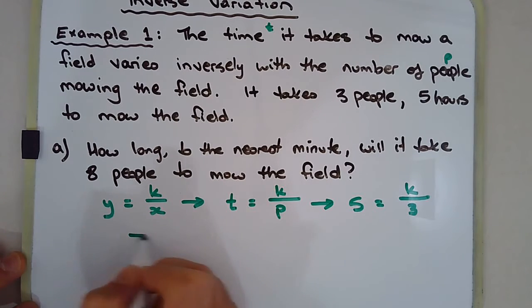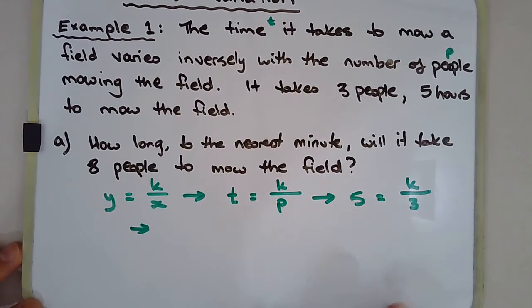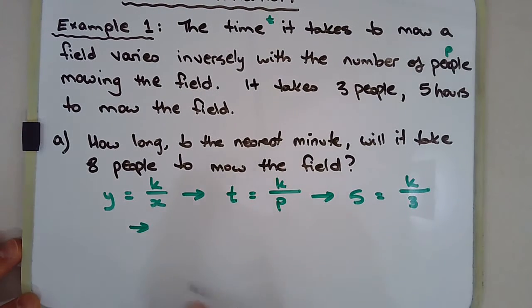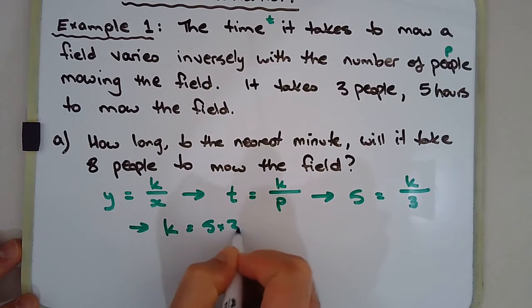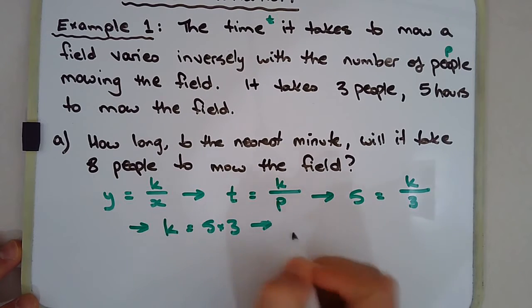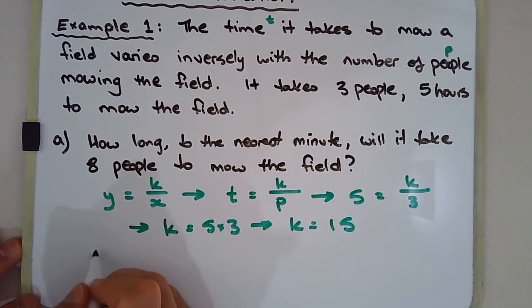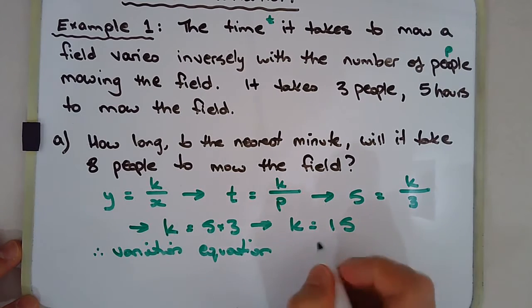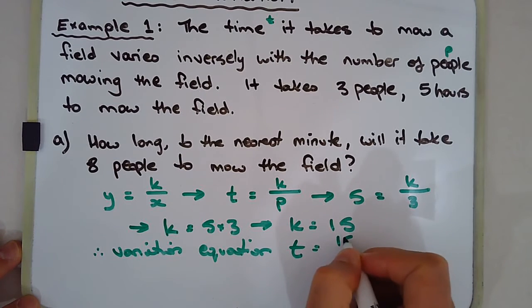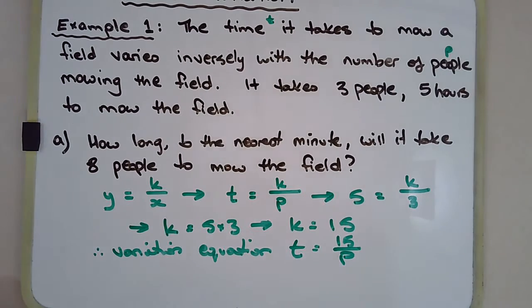So moving on sort of to the next line. So I'm doing this to save a bit of space here. So K is equal to five times three. So K equals 15. So therefore, the variation equation is T is equal to 15 over P.